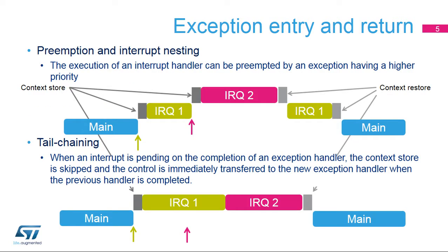The Nested Vector Interrupt Controller provides several features for efficient handling of exceptions. When an interrupt is being served and a new request with higher priority arrives, the new exception can preempt the current one. This is called Nested Exception Handling. The previous exception handler resumes execution after the higher priority exception is handled.